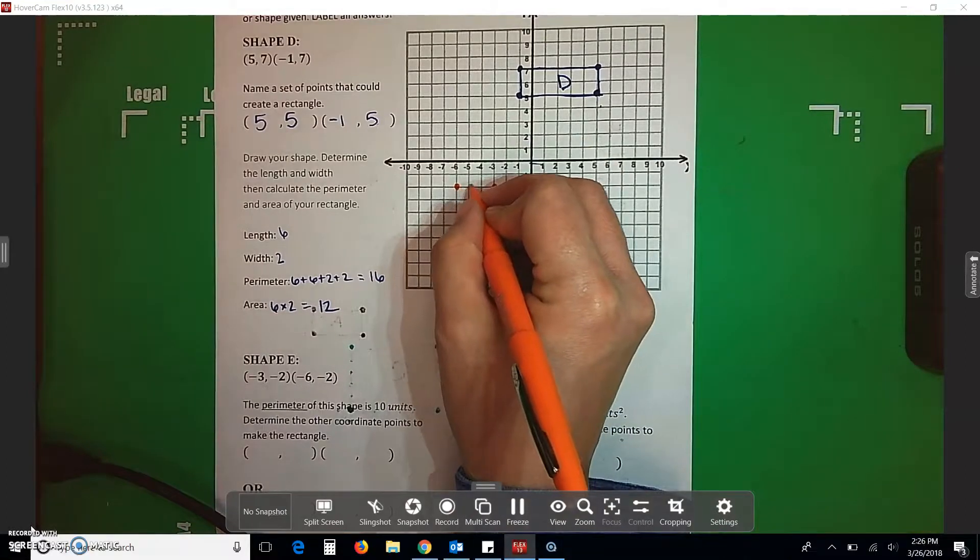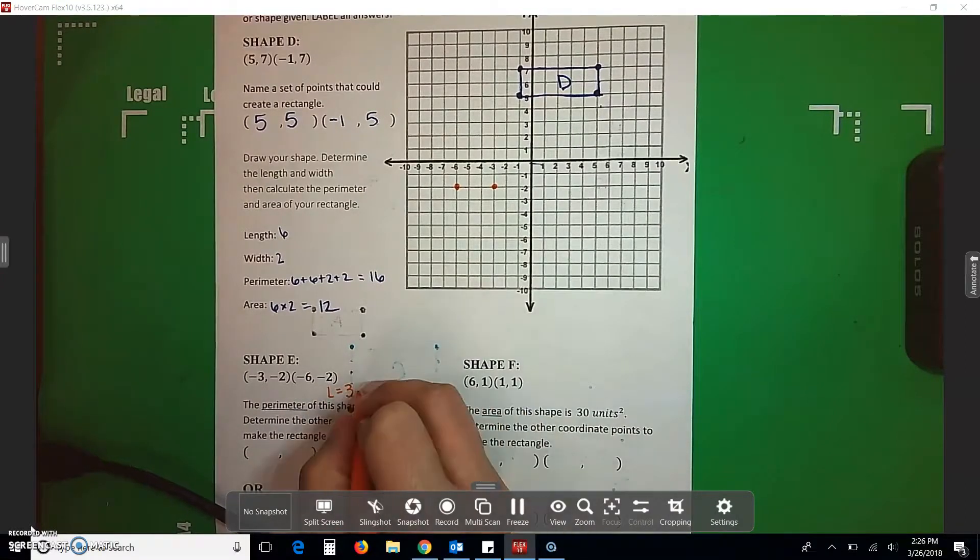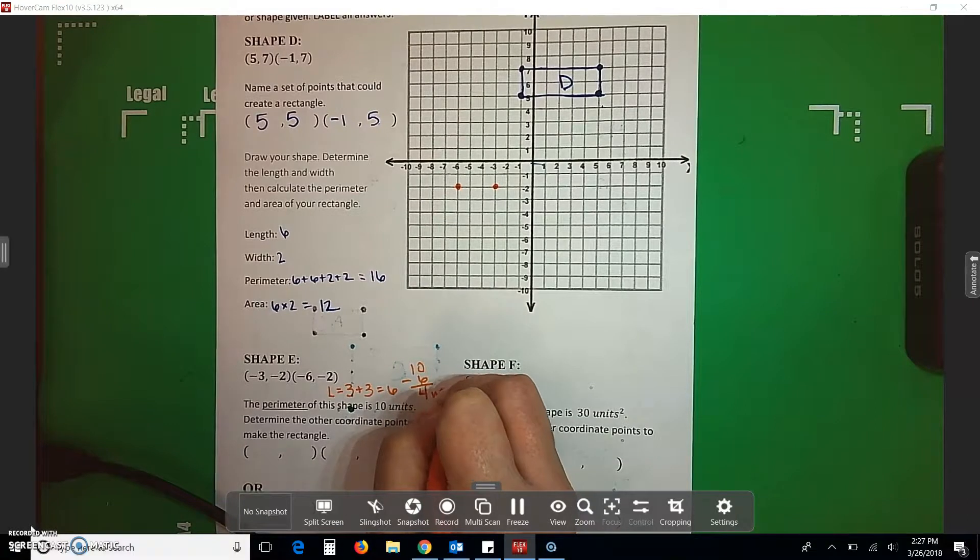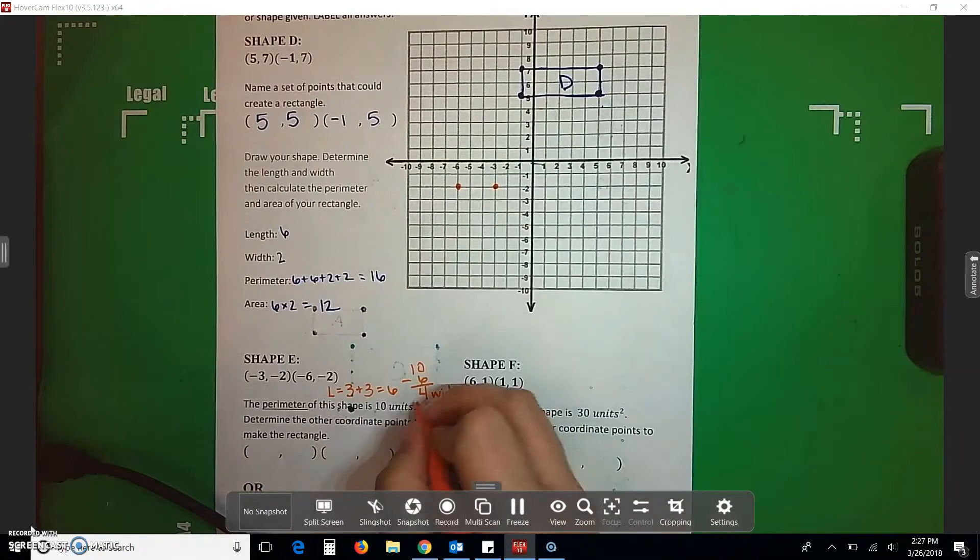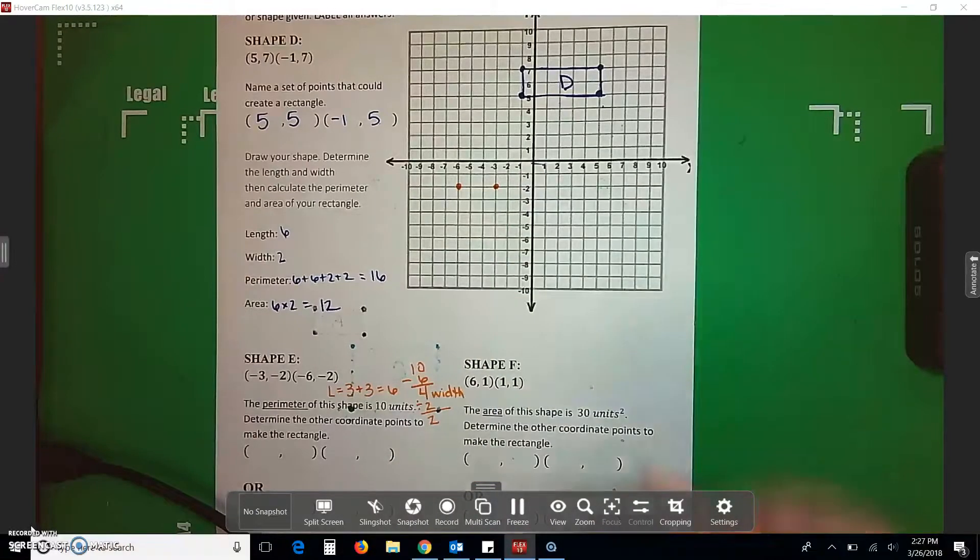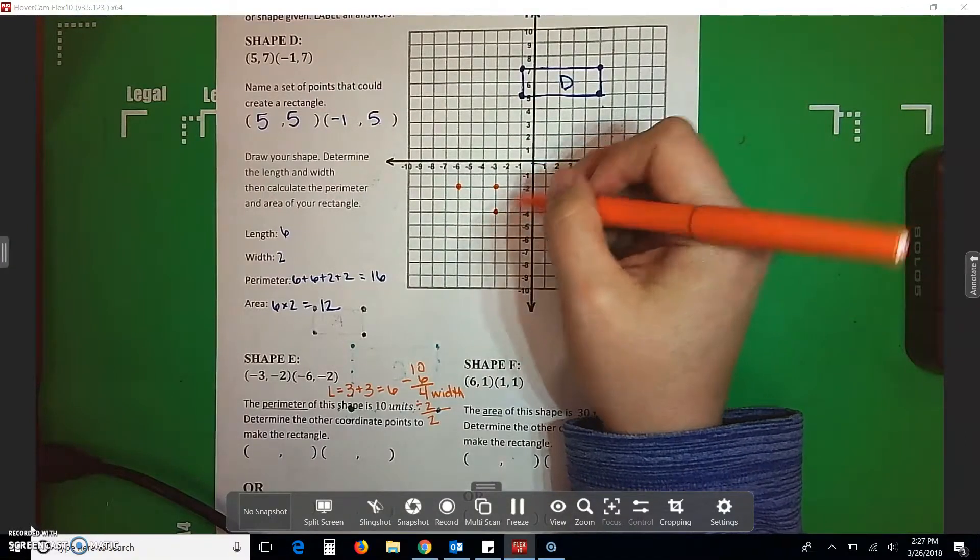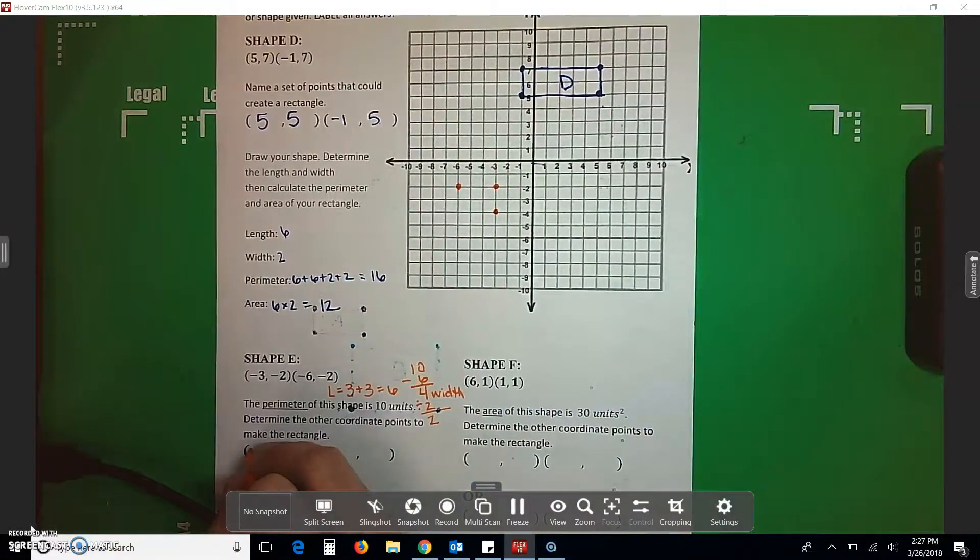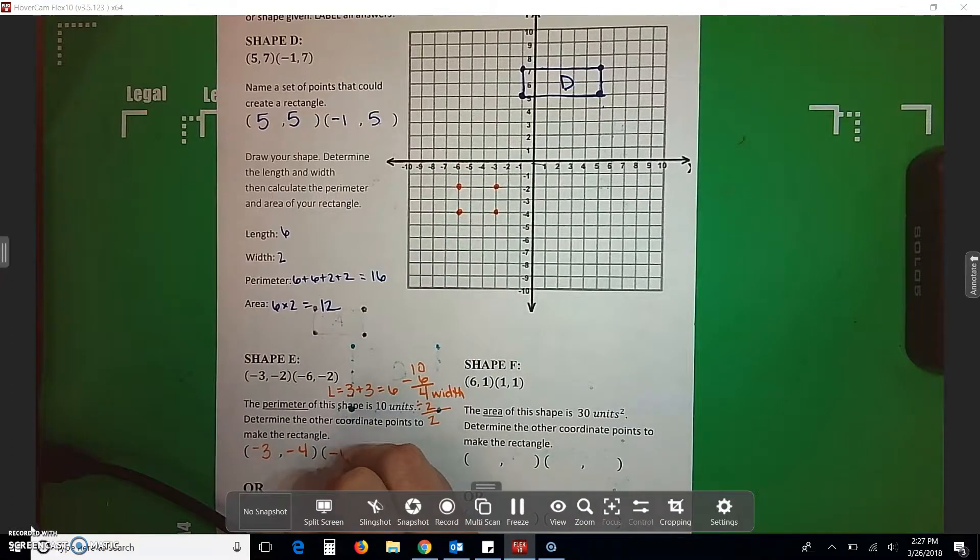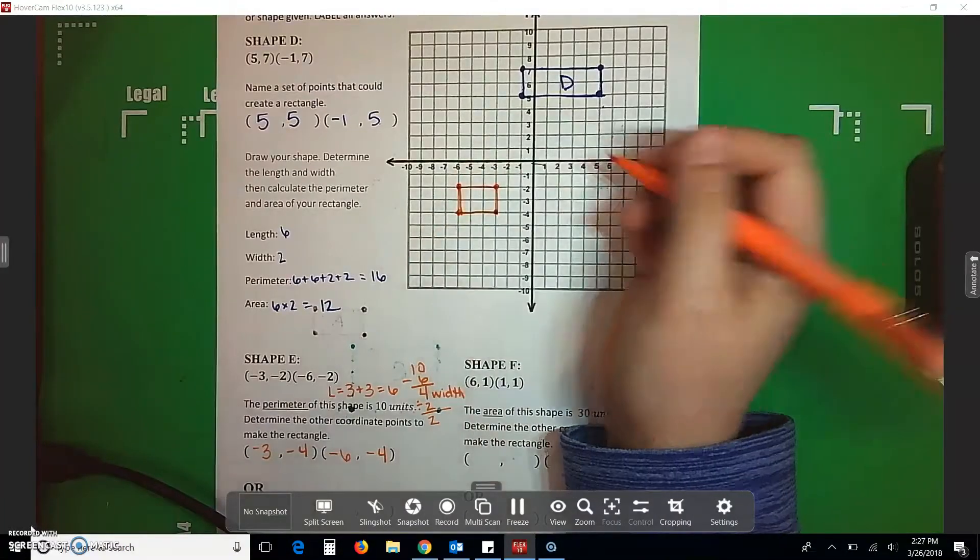Well, if my perimeter is 10 and I know right now I've got 1, 2, 3 for my length. And I know I have two of those, which gives me 6. That means that my width is 4. And I have two widths. I have to go on both sides. So 4 divided by 2 is going to give me 2 for the width of each side. So I know that I can go down 2 to get another point here. And then to plot my point, I go over negative 3 down negative 4. And my other point, I'm going to bring this one down to negative 6, negative 4. I'm going to connect these dots. This is shape E.